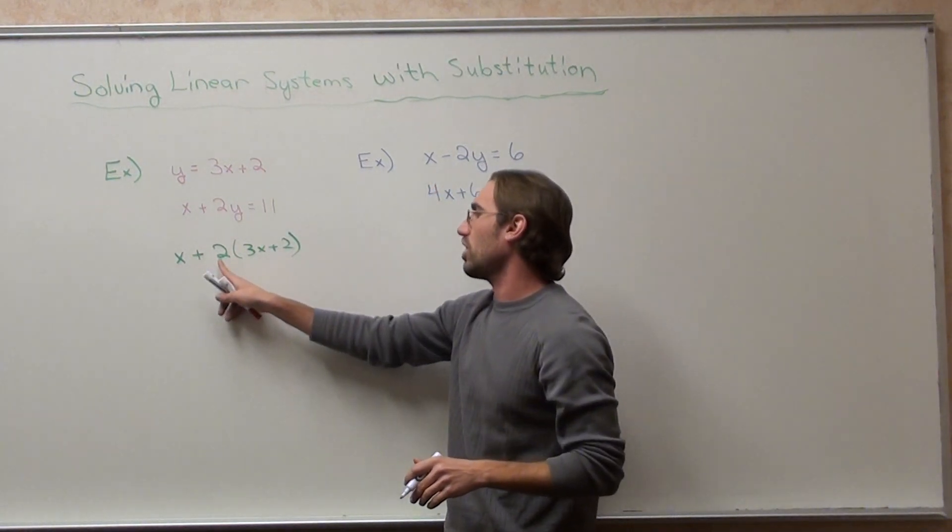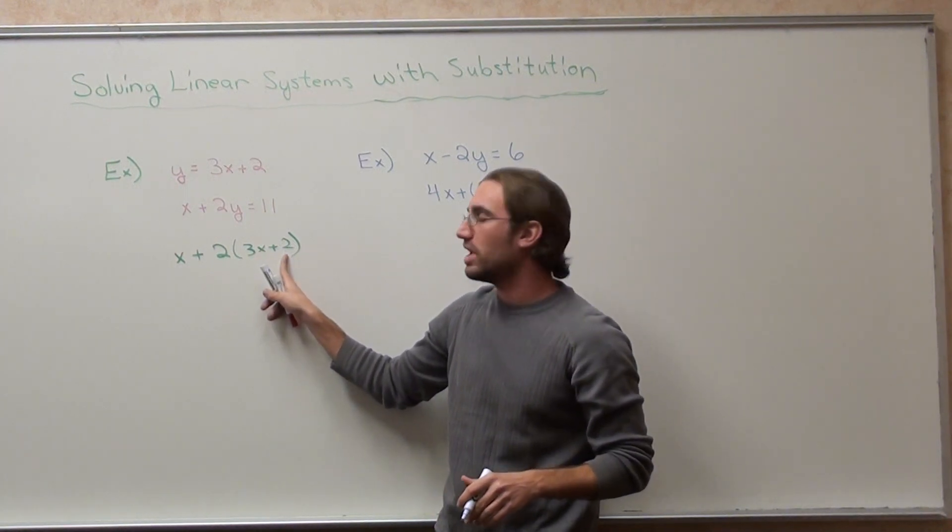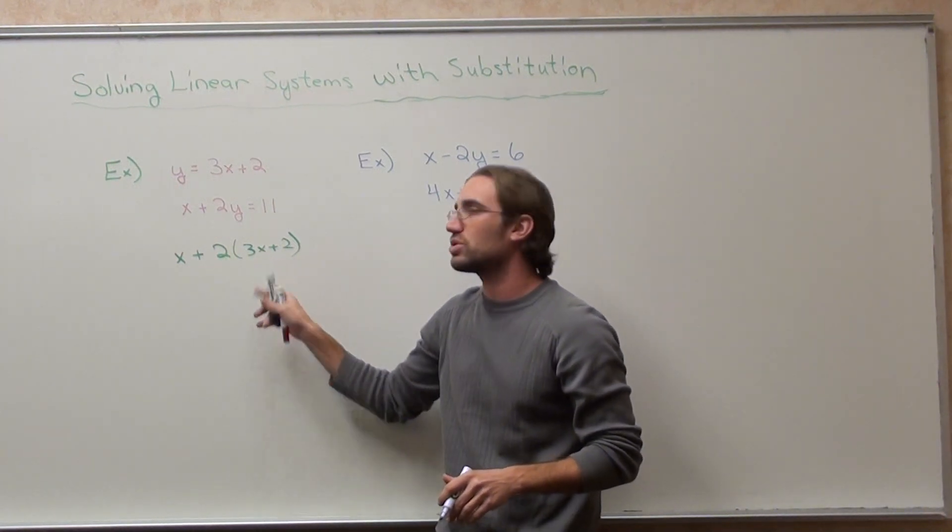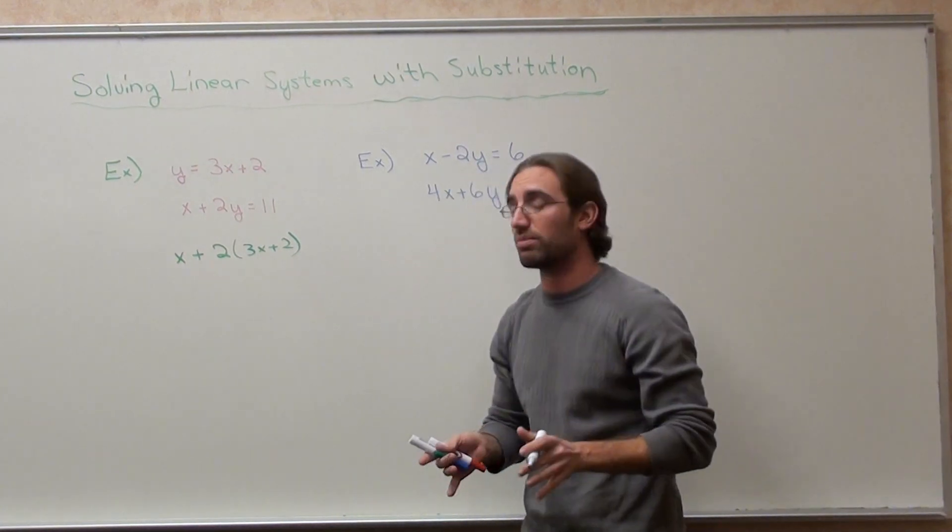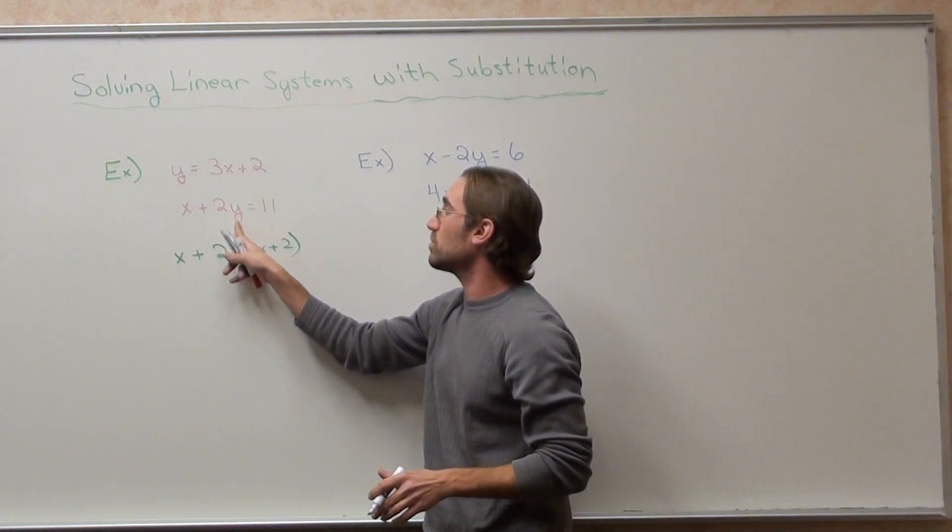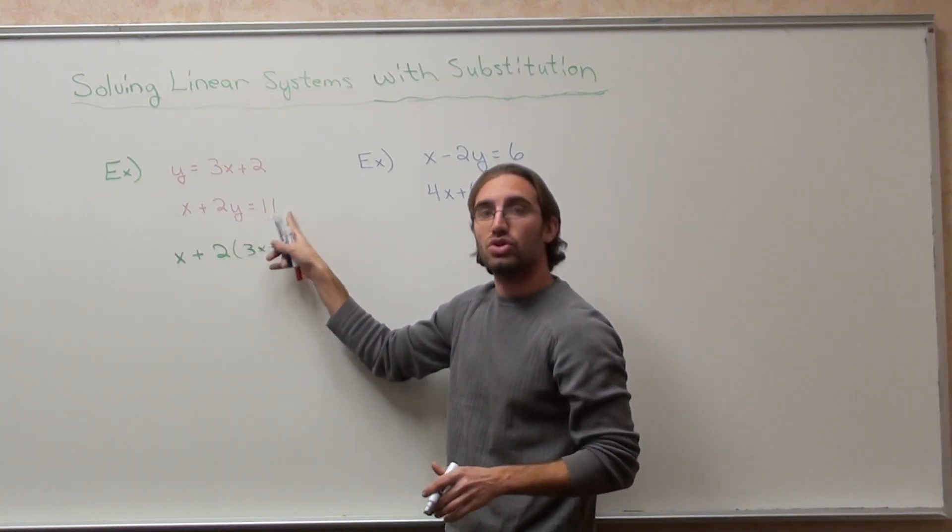Very big. Because students will say, oh, yeah, 2 times 3x is 6x. But then they'll just put plus 2. But it's not plus 2. It's 2 times 2. And you'll forget to do that if you don't put the parentheses. So, get in the habit of putting in parentheses. So, 2 times y. But y is 3x plus 2. And it's equal to 11.